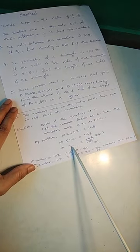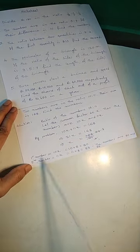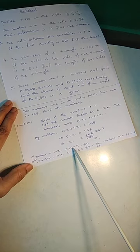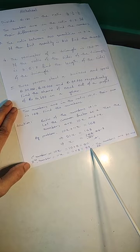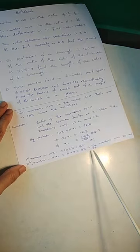By solving we are getting X equal to 8. Now the first number is 10X equal to 10 into 8 equal to 80. And second number 11X, 11 into 8 equal to 88. So the numbers are 80 and 88.